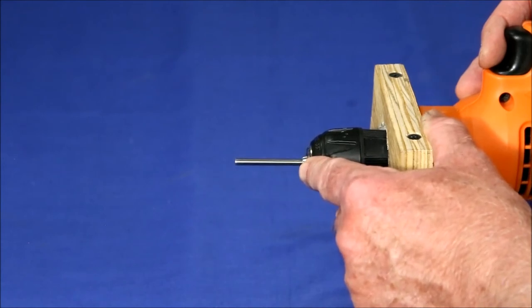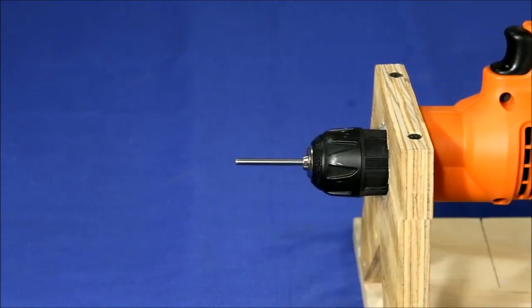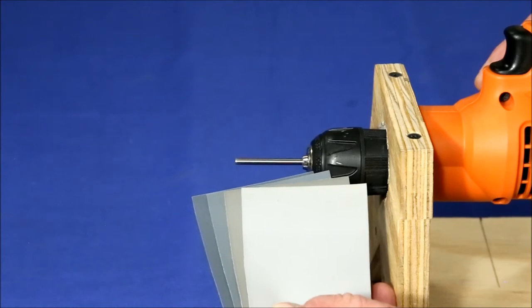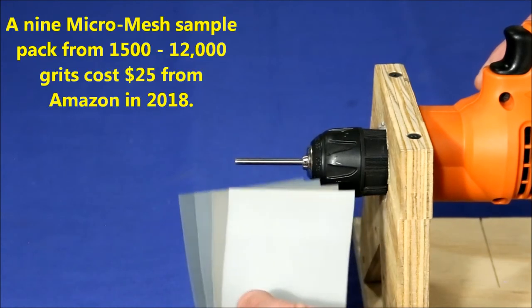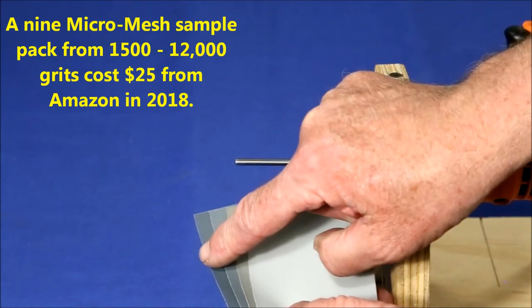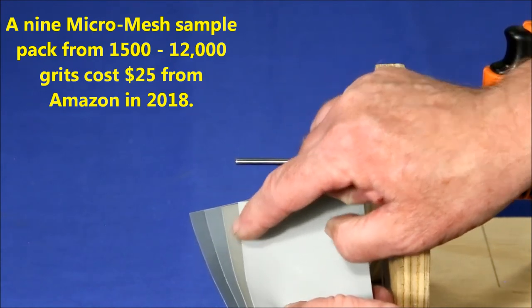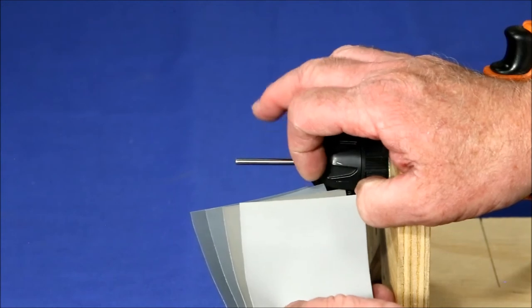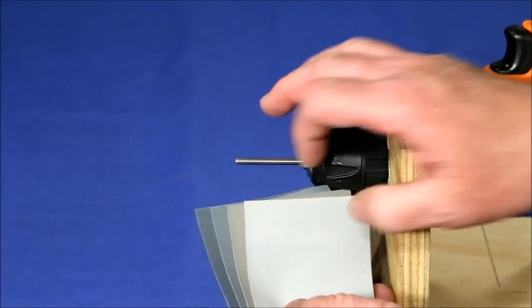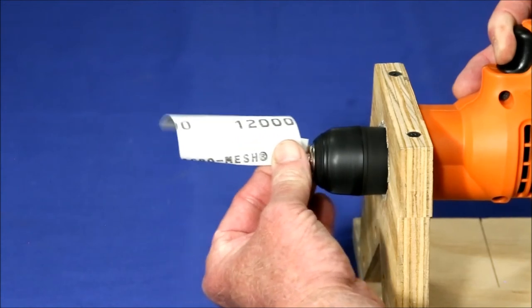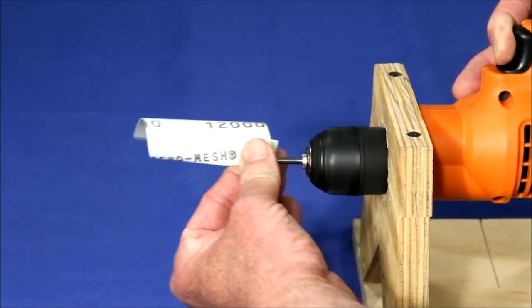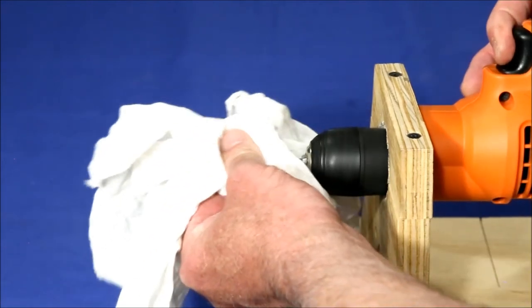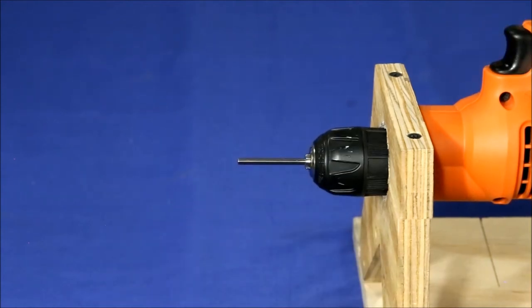But if you want to go that extra mile and have something really gleaming, you can finish it off with a set of micromesh sanding cloths. This is super fine stuff. I start with 4000, 6000, 8000, and finish with 12000 grit. When you're done with this, it'll be absolutely mirror perfect. It'll look like it was freshly chromed.